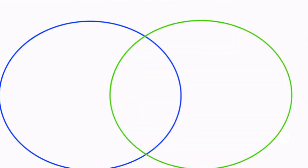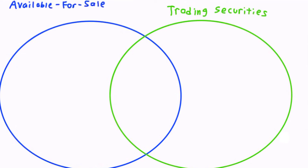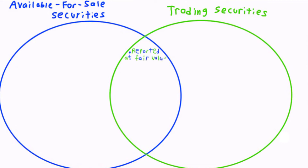The two security types that should be reported at fair value are called available-for-sale and trading securities. We will use a Venn diagram to show the similarities and differences between these two types of investments. First, let's start on the intersection of the circles where we will list the characteristics of both available-for-sale and trading securities. The main similarity between the two security types, and the reason we are discussing them in the same video, is because they are both reported at fair value.